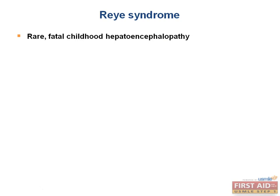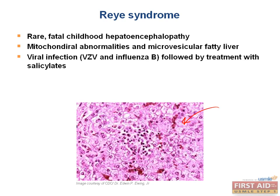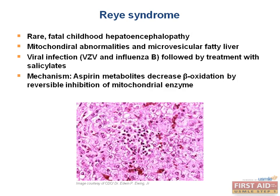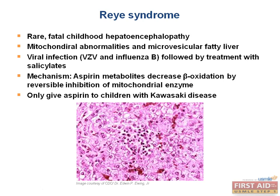Reye syndrome is a rare, often fatal, childhood hepatoencephalopathy. There are mitochondrial abnormalities in microvesicular fatty liver, and you can see the increased amounts of fat stored in the liver. Clinically, patients develop hypoglycemia as well as coma. It is associated with viral infections, particularly varicella zoster and influenza B, followed by treatment with salicylates. The aspirin metabolites reversibly inhibit a mitochondrial enzyme necessary for beta-oxidation. Therefore, it is really important not to give children aspirin. The only exception is Kawasaki disease, where the benefits outweigh the risks.